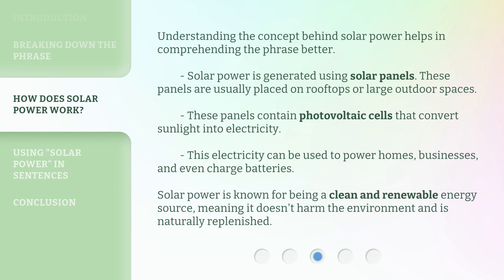Understanding the concept behind solar power helps in comprehending the phrase better. Solar power is generated using solar panels. These panels are usually placed on rooftops or large outdoor spaces, and they contain photovoltaic cells that convert sunlight into electricity. This electricity can be used to power homes, businesses, and even charge batteries. Solar power is known for being a clean and renewable energy source, meaning it doesn't harm the environment and is naturally replenished.